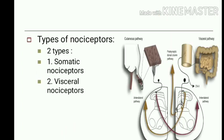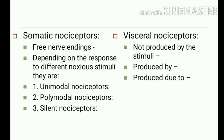Types of nociceptors are mainly of two varieties: somatic and visceral nociceptors. Somatic nociceptors are free nerve endings of A-delta and C fibers. Depending on response to different noxious stimuli, somatic nociceptors are of three varieties: unimodal nociceptors, which respond to one modality like chemical or heat stimulus; polymodal nociceptors, which are sensitive to several varieties of noxious stimuli; and silent nociceptors, which are activated only in inflammation or tissue damage.